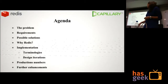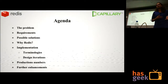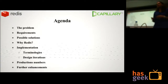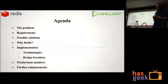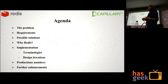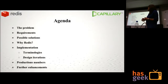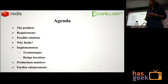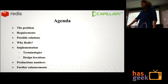The agenda for the day would be: why we required a rate limiting module to be built at Capillary, what were the requirements, the possible solutions to implement rate limiting, why Redis was chosen over all the other possible solutions, implementation details like the algorithm, design or the data model iterations it went through, few production numbers on throughput, memory, and further enhancements that are being planned.